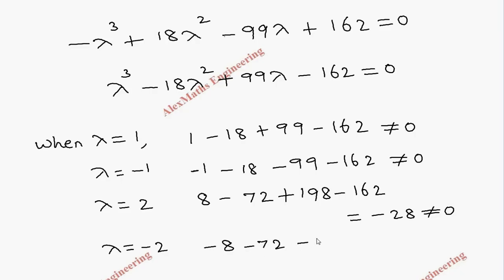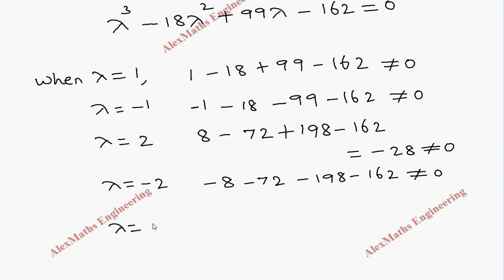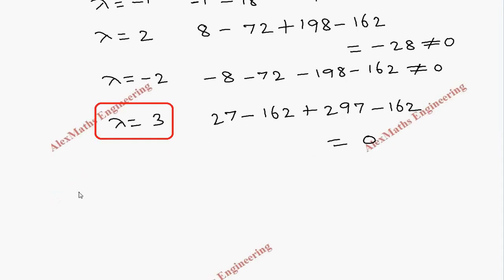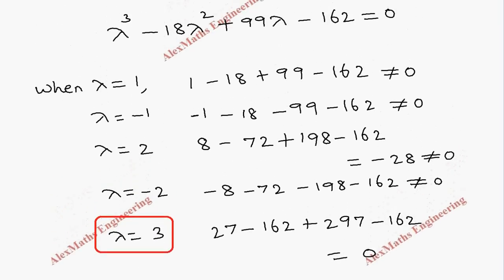Now let's substitute lambda = 3: 3 cubed is 27, minus 18 times 9 gives minus 162, plus 99 times 3 gives 297, minus 162. After simplifying we get 0. So lambda = 3 satisfies the equation and is one of the roots. We will now use synthetic division to get the quadratic expression.